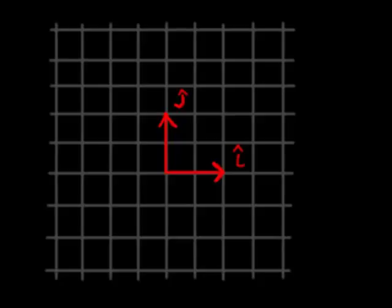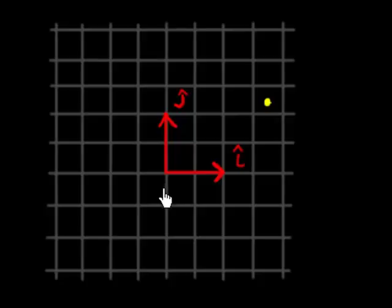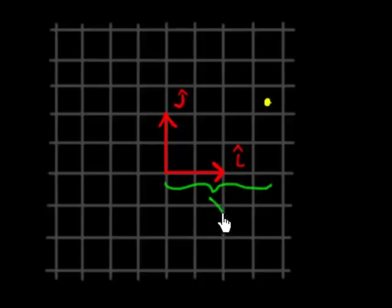You're probably all familiar with Cartesian coordinates, in which space is filled with a graph-like coordinate grid. If we have a point sitting right here, we can represent the position of that point by coordinates x and y. You measure how far your point is in the horizontal direction and call that x, and how far it is up and call that y.